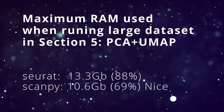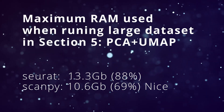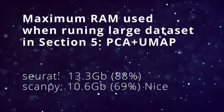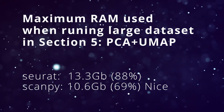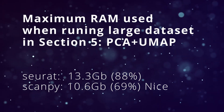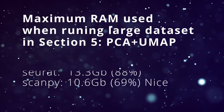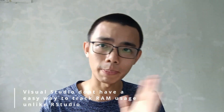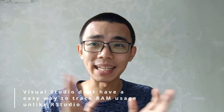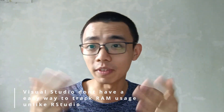One of the other significant things I found is that RAM usage of the two programs is very different. In the traditional mindset, yes, R uses a lot more RAM, which we can actually observe in the large dataset, where Seurat uses 13.3 GB of RAM — that's 88% — while ScanPy only uses a maximum of 10.6 GB, which is about 60 to 70% of total system memory. I'm running a 16 GB system total, so 88% usage might actually push things into the page file and slow down analysis in some way, depending on your SSD.